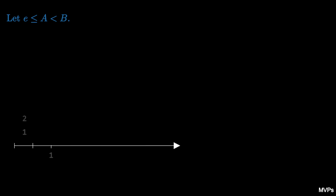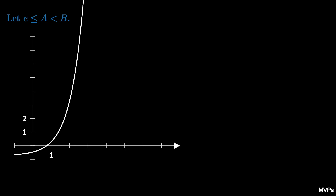Start with two real numbers a less than b, where a is greater than or equal to e. Graph the curve of the increasing function y equals a to the x over a minus 1 over the natural log of a. Because a is greater than e, the function is positive when x is 1.